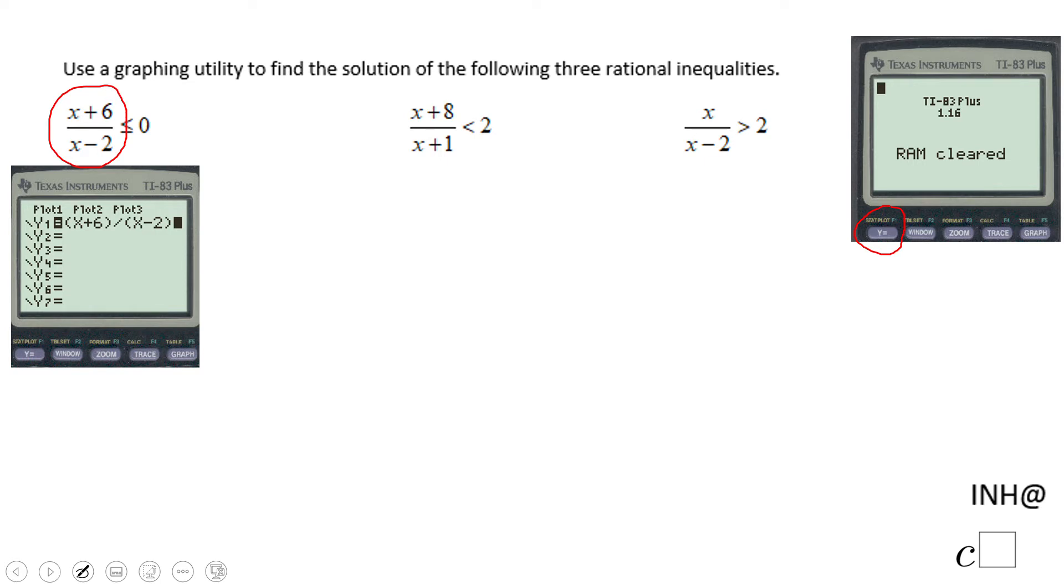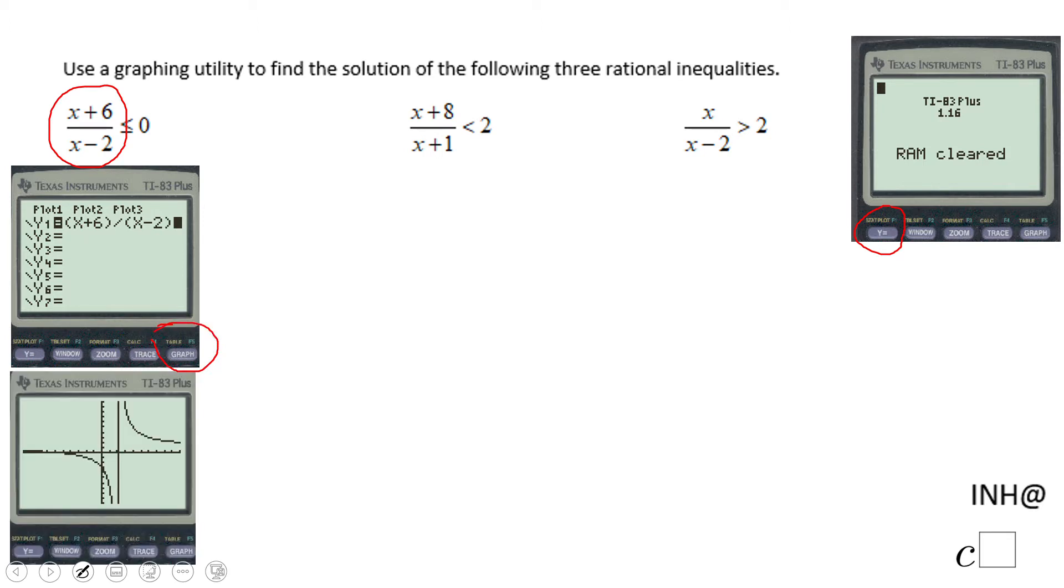To see the graph I'm going to choose this button which says graph, and I'm going to get a picture like this. I'm looking at when this function is less than or equal to zero.